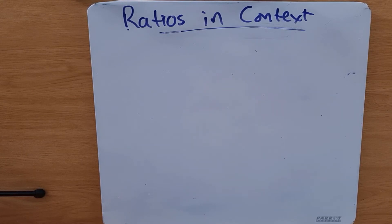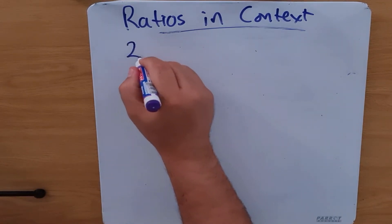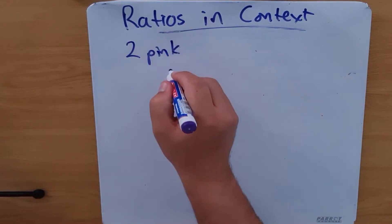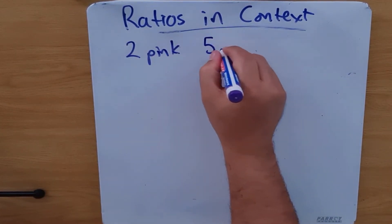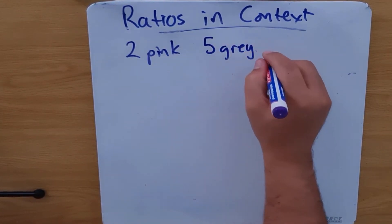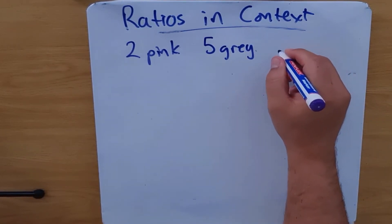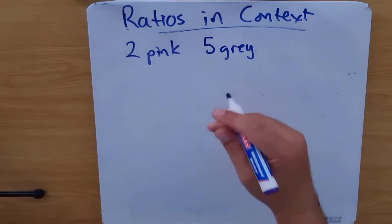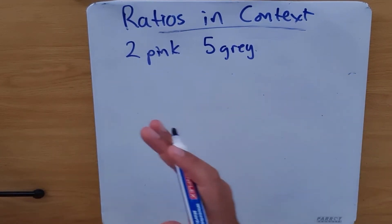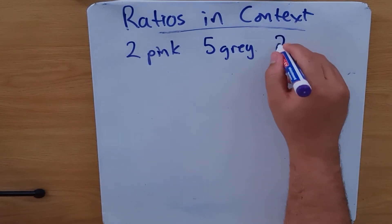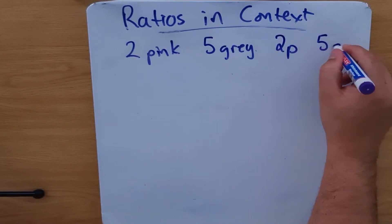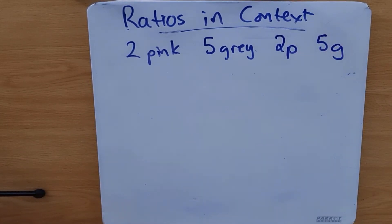She wants the pattern to be two pink beads, then five gray beads, then two pink beads again followed by five gray beads. So it's two pink, then five gray, then two pink, then five gray. She has 20 pink beads in total. How many bracelets can she make?